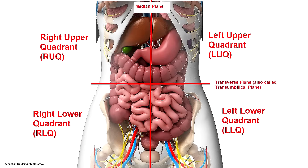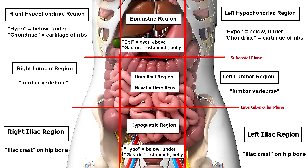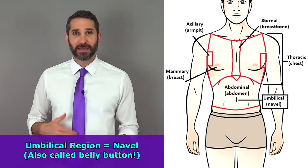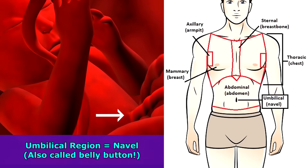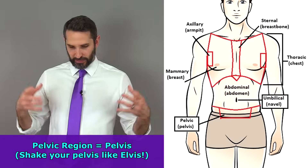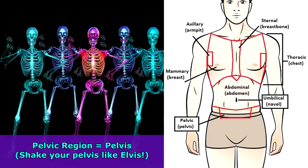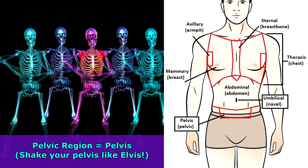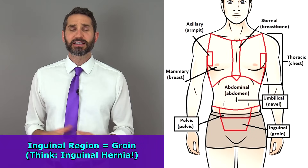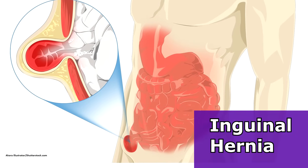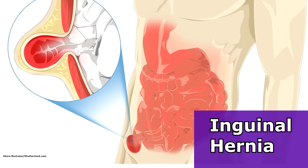The abdominal region can also be divided into either four quadrants or nine abdominal regions — there's an anatomy video on that if you want to dig deeper. The umbilical region is the area at the navel or belly button where your umbilical cord attached in the womb. The pelvic region is that region between the hip bones — always remember that Elvis used to shake his pelvis. Inferior to that is the inguinal region, where you can have inguinal hernias, where your intestines literally poke through your abdominal wall.